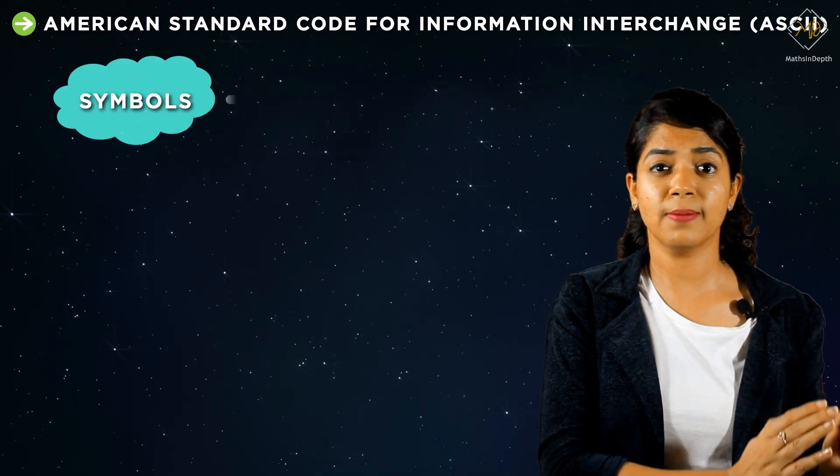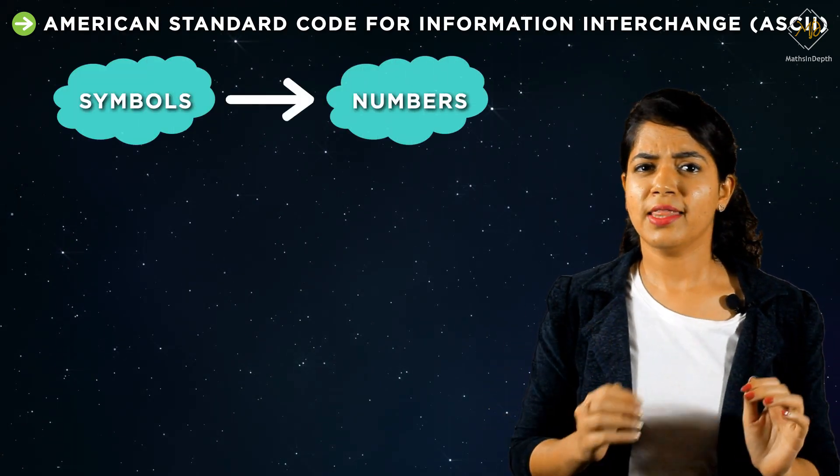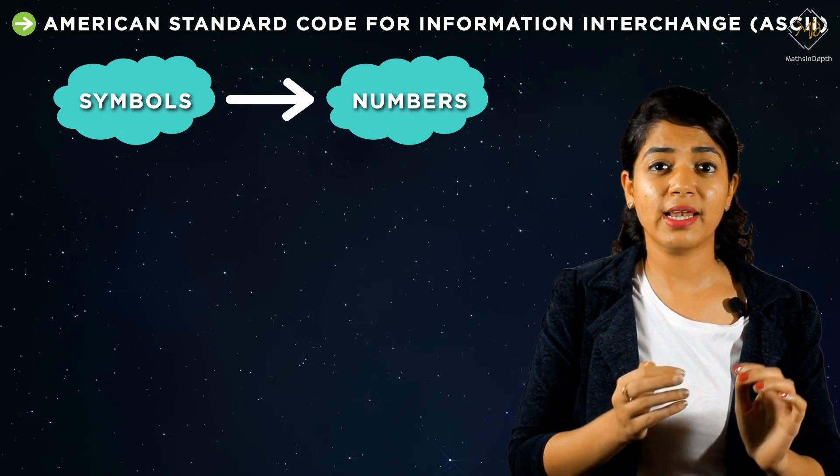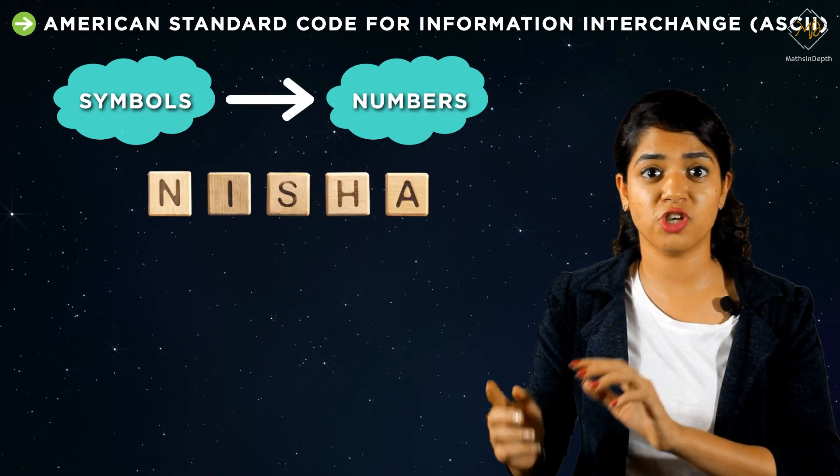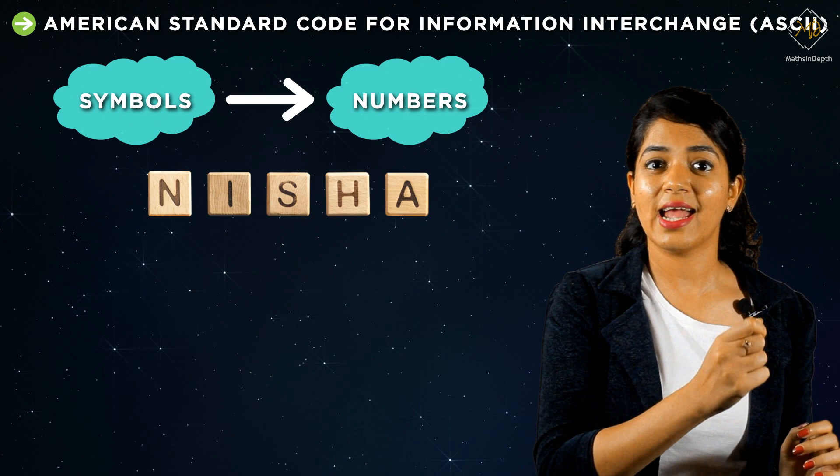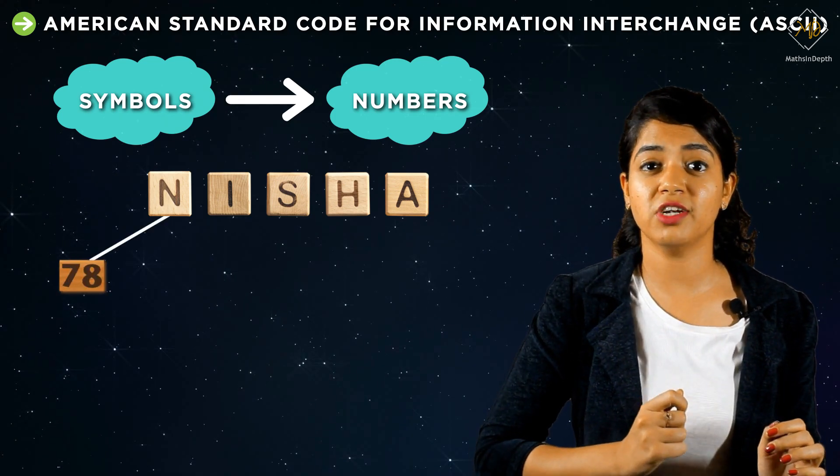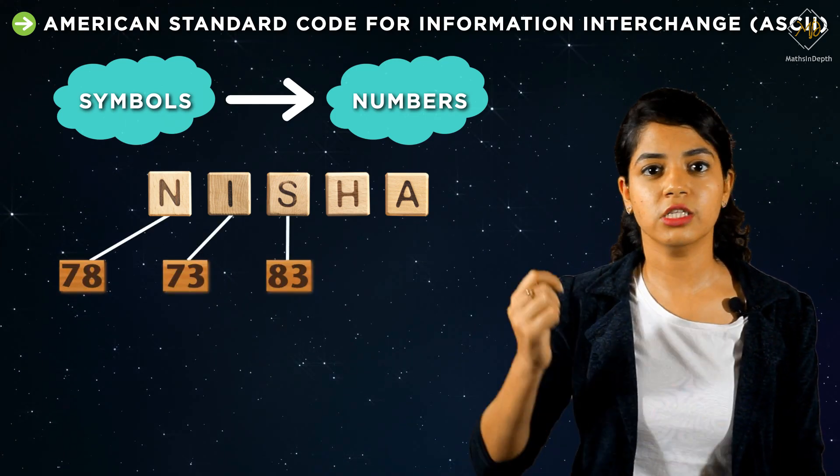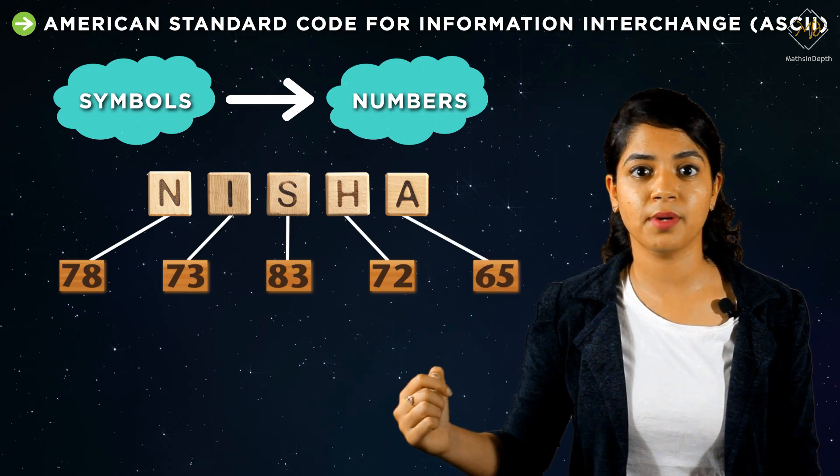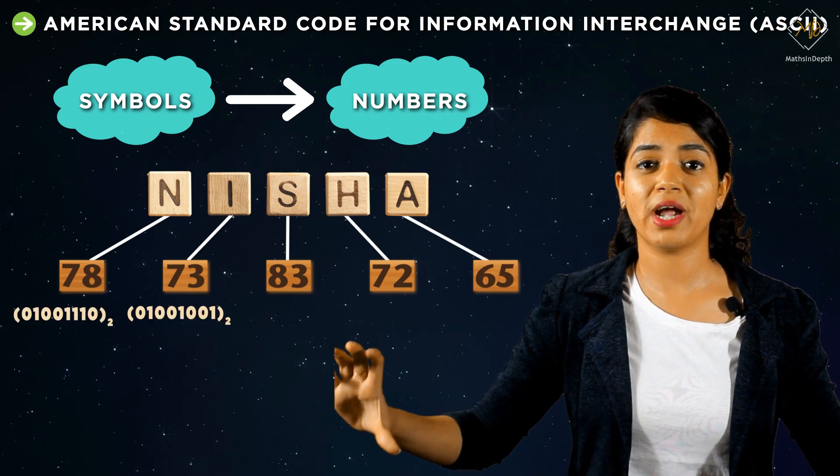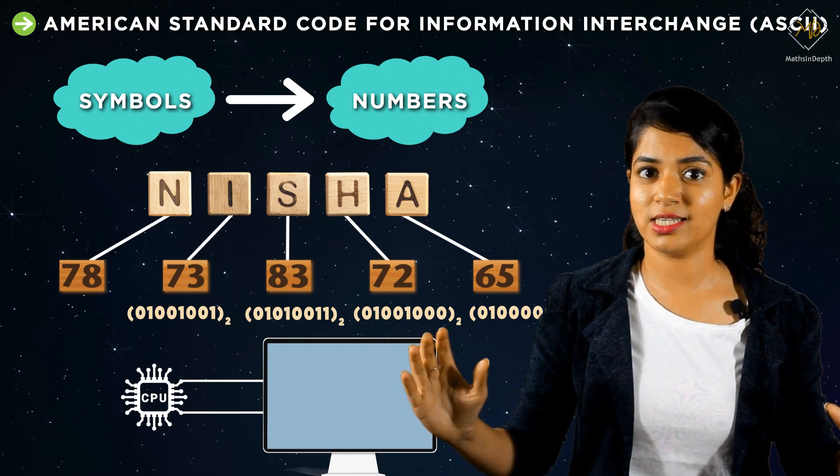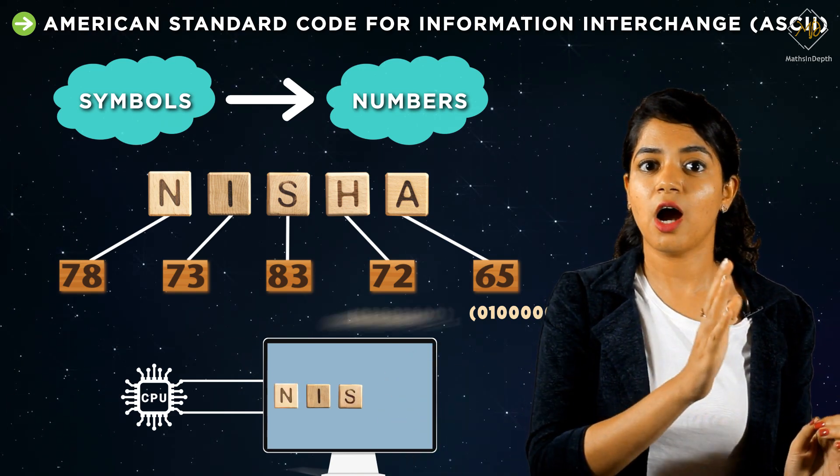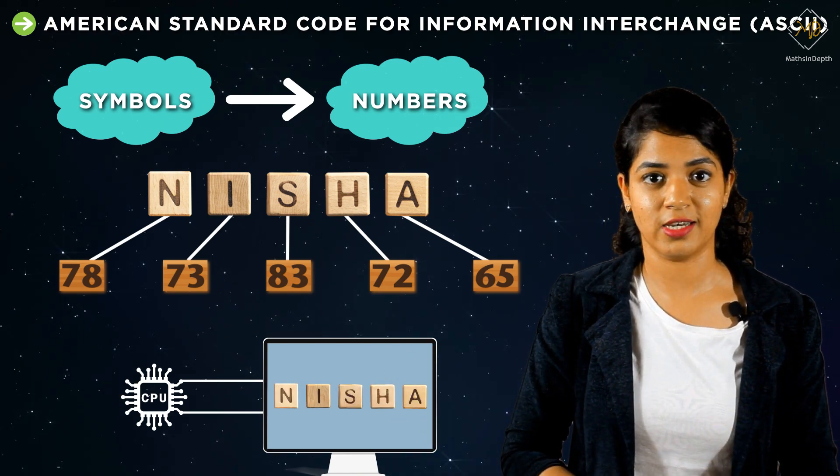That is, whenever I want to type my name Nisha—N-I-S-H-A—using a keyboard, this N is represented using number 78. Similarly, all the other letters are represented by some numbers. Therefore, a huge binary stream is formed, which is processed by the CPU, and you can see the output on your display screen.